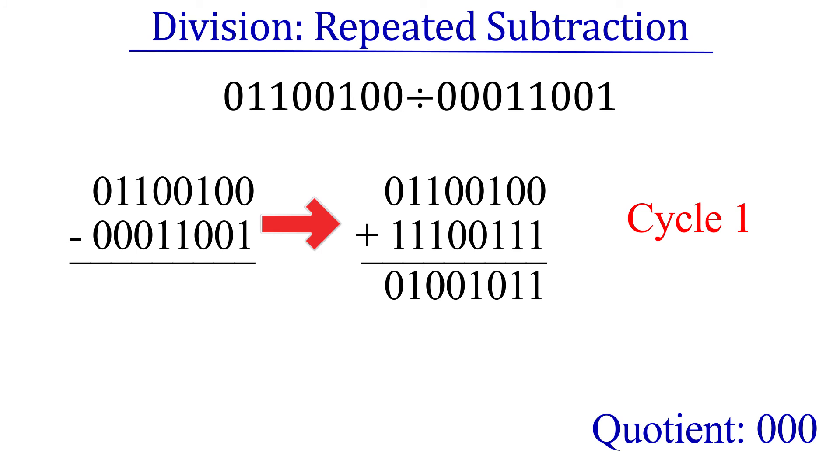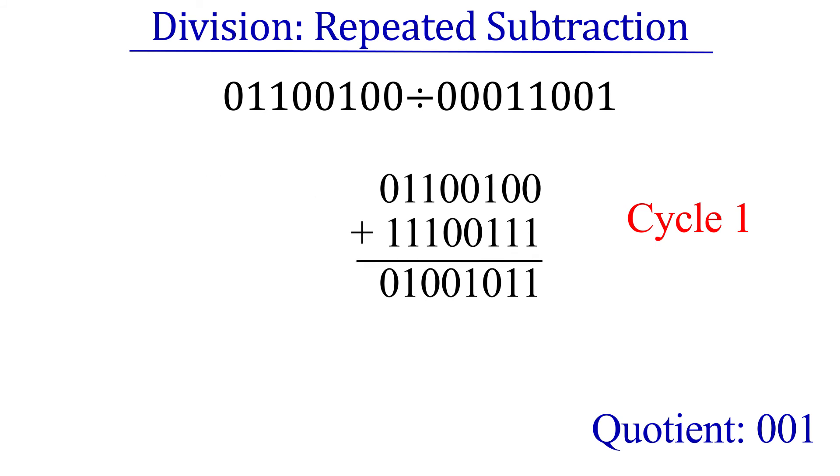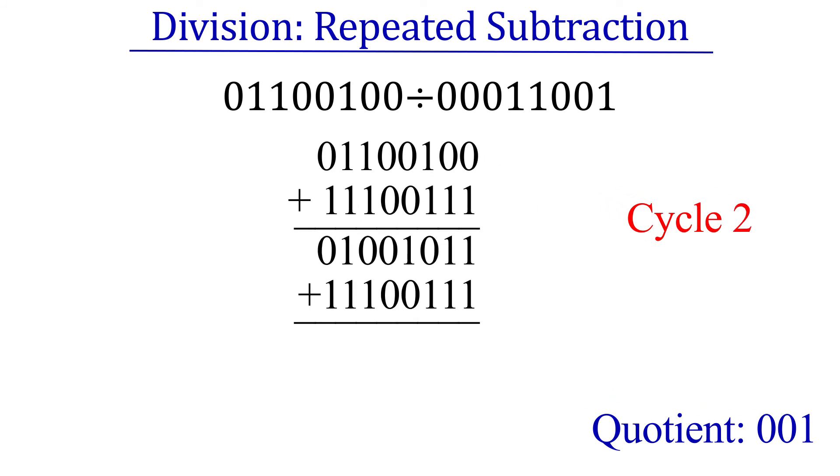The carry is discarded and we have our first partial remainder. It's positive, so we need to keep going. So let's increase the quotient by one and perform the next subtraction. This time, the dividend is the partial remainder and the divisor is the two's complement of the divisor and we get our second positive partial remainder.